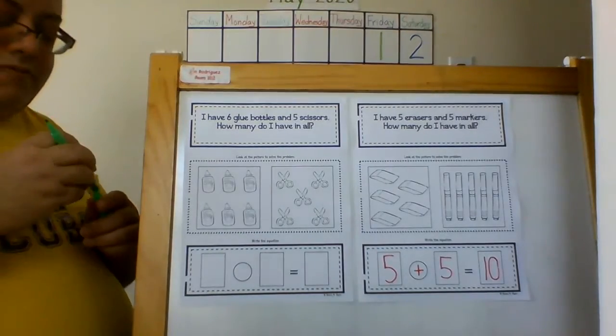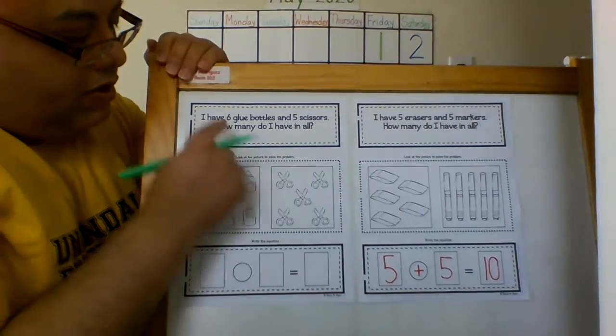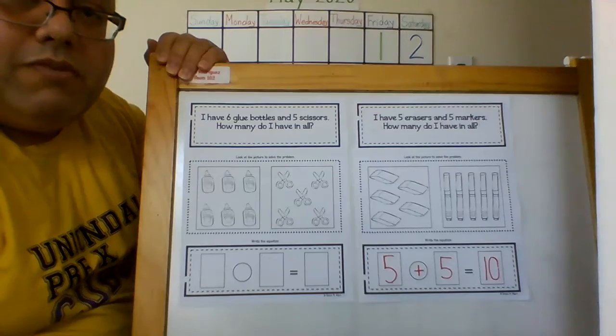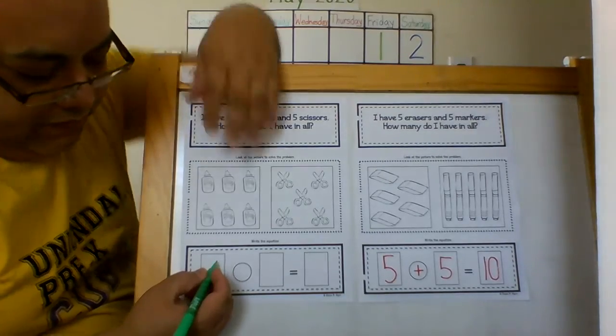So how do you write it? Look at the first number. The first number is six. So here we go,